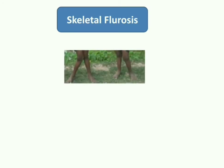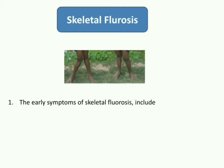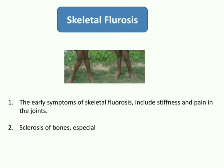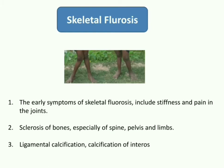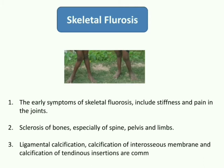The second type is skeletal fluorosis. As you can see, the limbs of the patients here are banded, indicative of skeletal fluorosis. The early symptoms include stiffness and pain in the joints. Sclerosis of bones, especially of the spine, pelvis, and limbs, occurs in skeletal fluorosis. Ligamental calcification, calcification of interosseous membrane, and calcification of tendinous insertions are commonly seen. As you can see in this picture, indicative of spinal skeletal fluorosis.